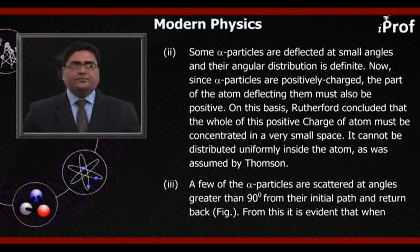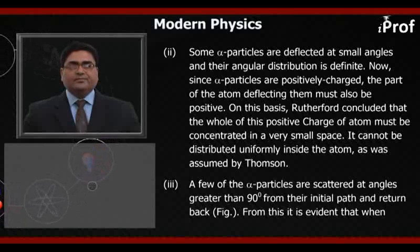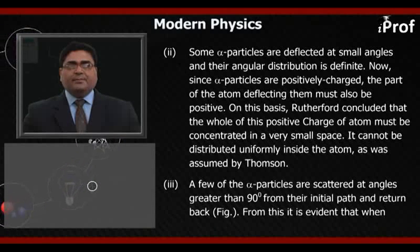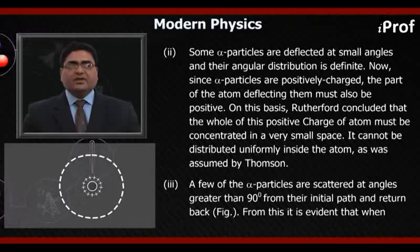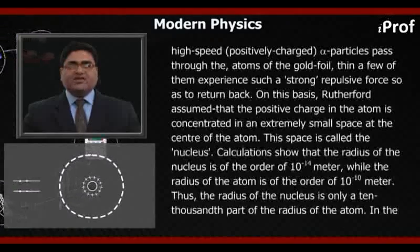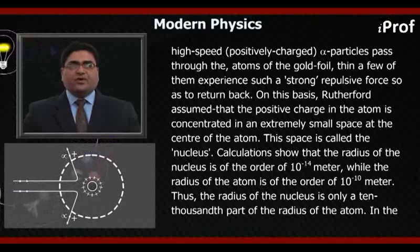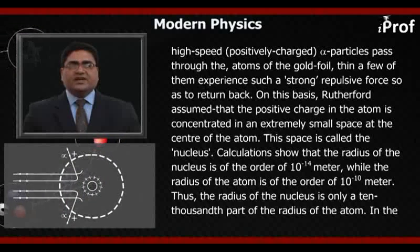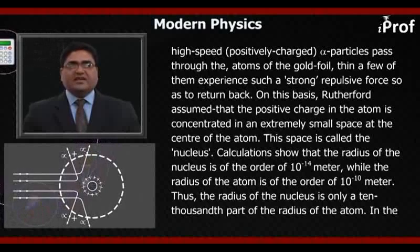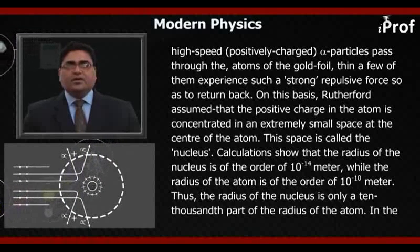Third, a few of the alpha particles are scattered at angles greater than 90 degrees from their initial path and return back, as shown in figure. From this, it is evident that when high speed positively charged alpha particles pass through the atoms of the gold foil, a few of them experience such a strong repulsive force so as to return back. On this basis, Rutherford assumed that the positive charge in the atom is concentrated in an extremely small space at the center of the atom. This space is called the nucleus.